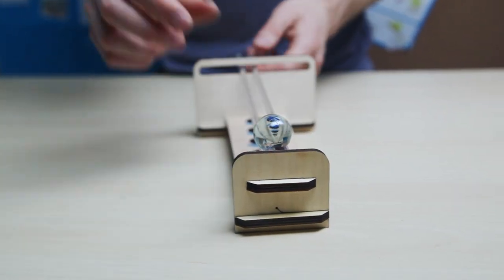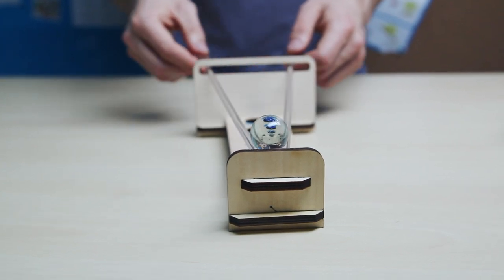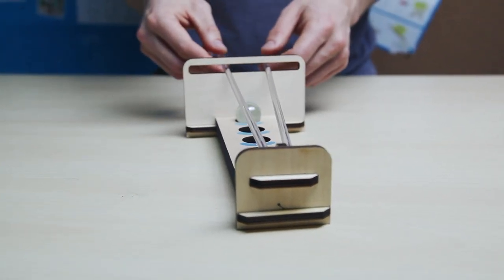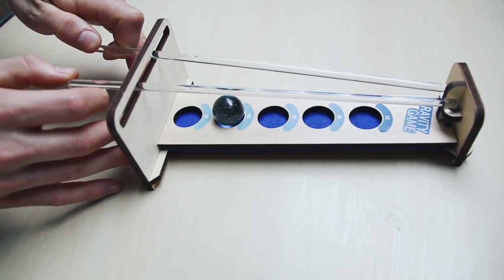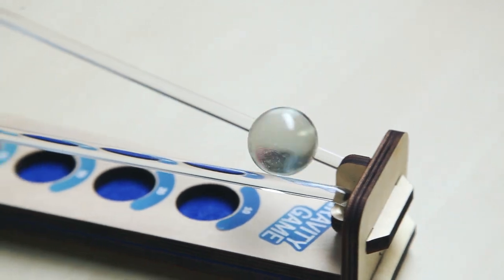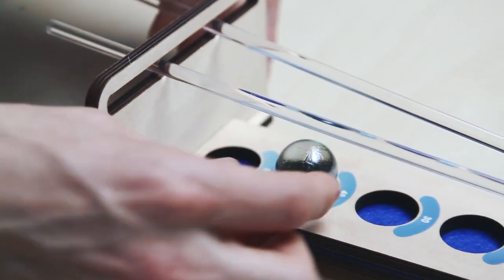To do this, start with the ball resting on the narrow end. Spread the rods apart to start the ball rolling, then squeeze them together. If you do this at the right time, the ball should shoot up the ramp. You can then open the rods again to drop the ball into one of the wells.